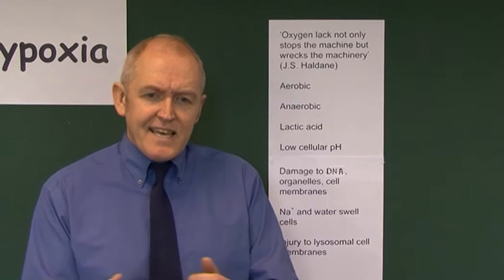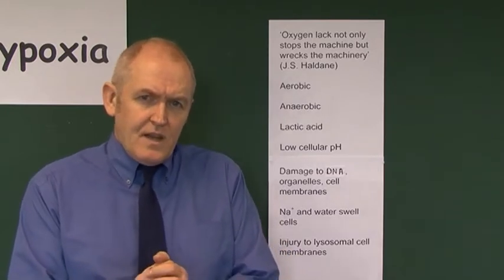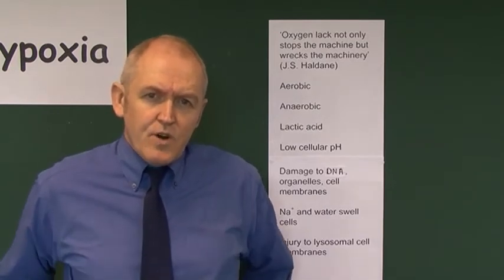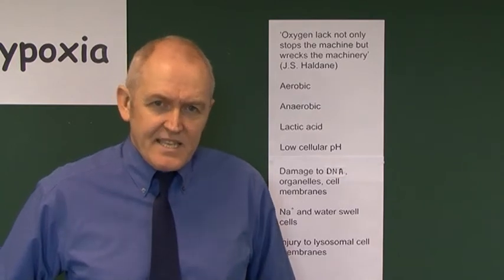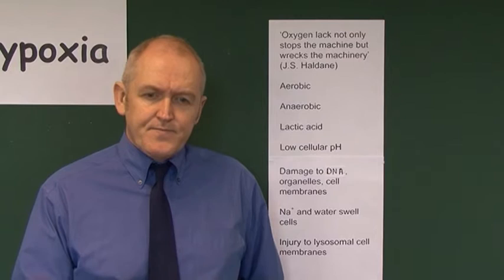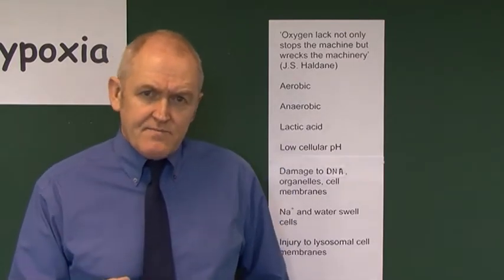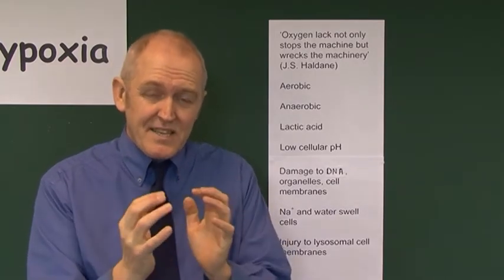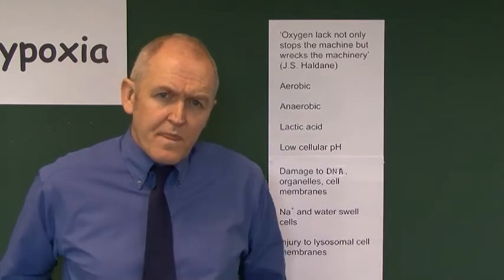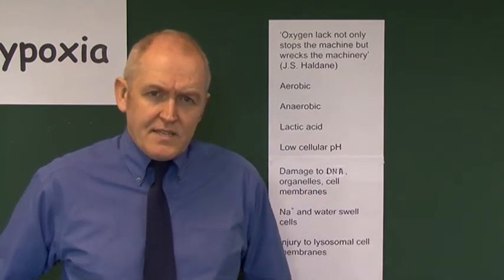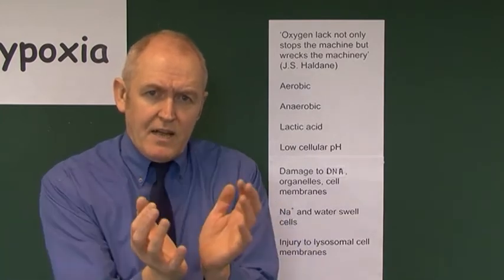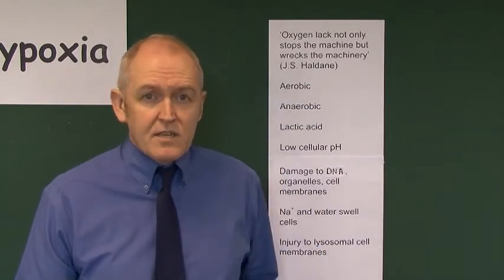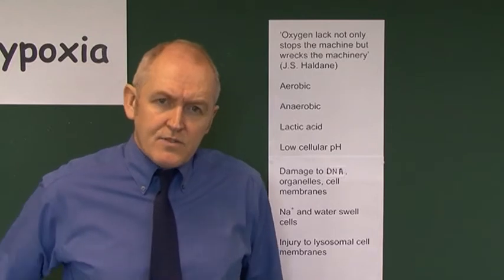The trouble with anaerobic respiration is that lactic acid is produced. When lactic acid is produced, the pH of the cell decreases — in other words, the cell becomes more acidic because of the accumulation of lactic acid. This has many effects. For example, the chromatin — the nuclear material in the cell — will start clumping together, so there can be damage to the very DNA of the cell. It also particularly affects the membranes: the cell membrane on the outside, the membranes around cell organelles, around mitochondria, and around lysosomes.